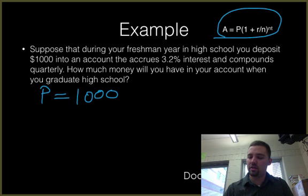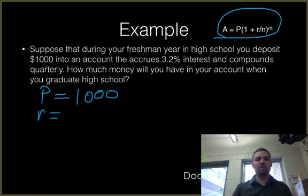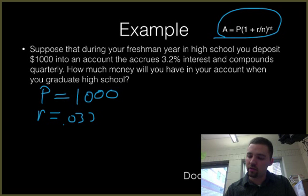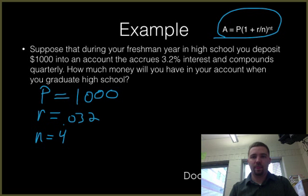All right. R is the rate, and remember that R is 3.2, but we would write it as .032, okay? Let's see, what else do we need? N. N is quarterly, number of times we compound per year. Quarterly means four times a year, so N equals four, okay?